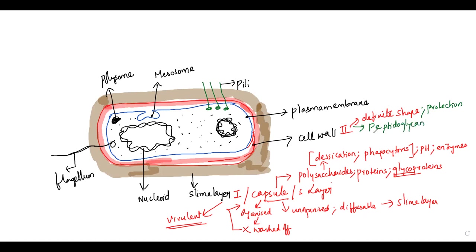Peptidoglycan — peptide plus glycan sugars — peptidoglycans, or you can even call this as murein. You can even find murein in blue-green algae, which is a cyanobacteria also. And remember that bacteria are usually going to be classified into two different types.